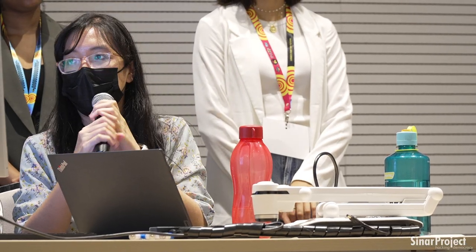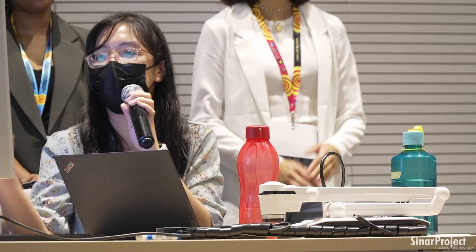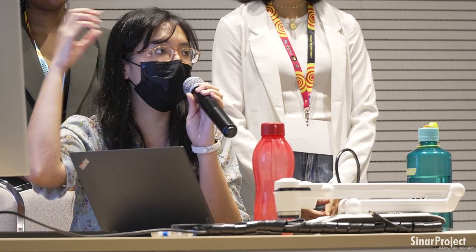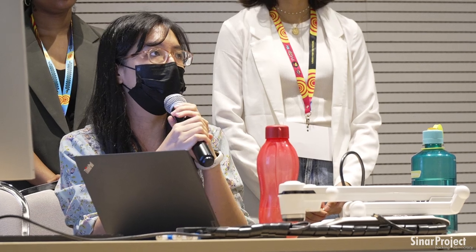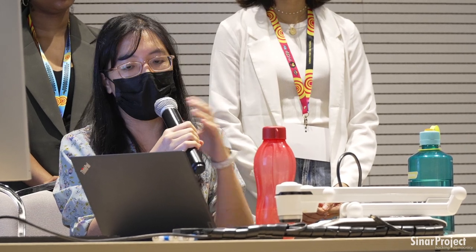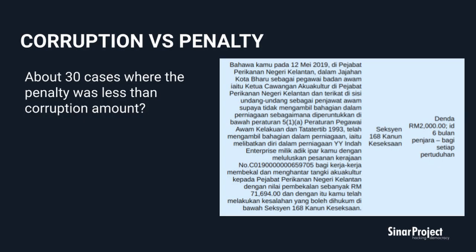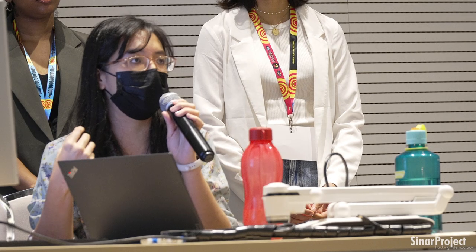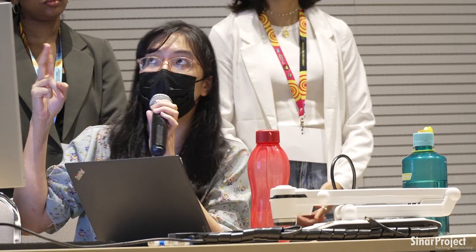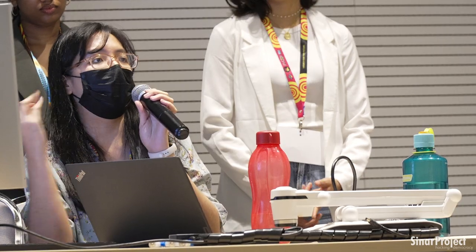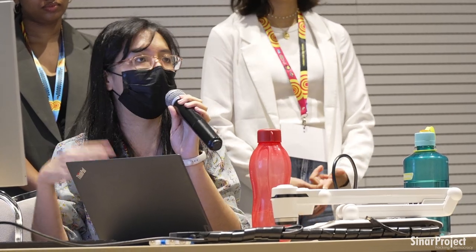We also found out that some of the offences, when we extracted the summary of offence, actually mentioned how much was received or paid as part of the corruption. I found about 30 cases where the amount is actually far exceeding the penalty received — for example, in one case the amount was $71,000 but the offender was only fined $2,000.